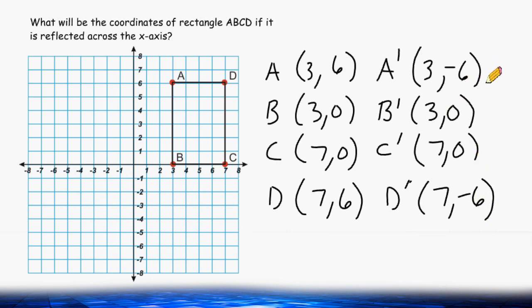Now that we have our new coordinates, let's plot them on the coordinate plane. We have to plot the new point A at (3, -6). Let's make sure to label this A.